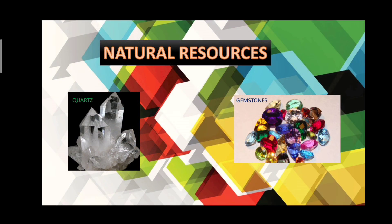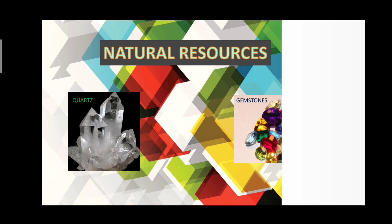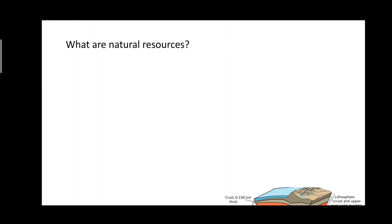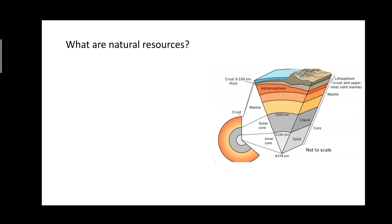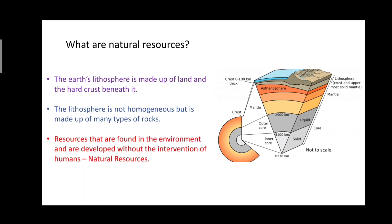Today I will be telling you all more about natural resources — what are natural resources? To know more about natural resources, we must know about the interior of the earth. We get most of the resources on earth from the crust, which is the topmost and thinnest layer. The earth's lithosphere is made up of land and hard crust, and the crust is not homogeneous — that means it is not uniform. It is made up of many types of rocks, and these different kinds of rocks contain different resources.